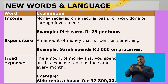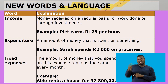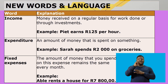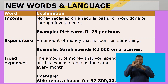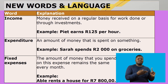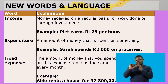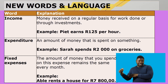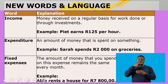Fixed expenses: the amount of money that you spend on this expense remains the same every month. For example, Abel rents a house for seven thousand eight hundred rand, so every month he needs to pay that seven thousand eight hundred rand.